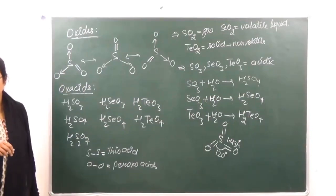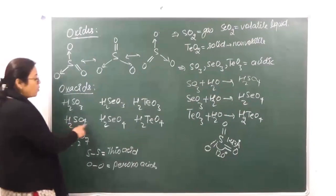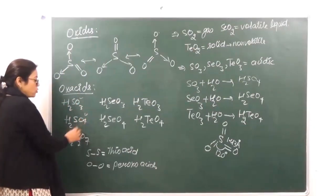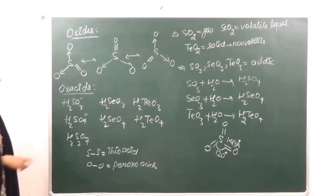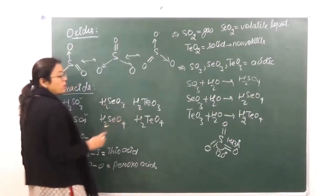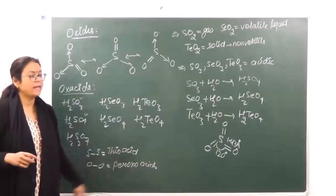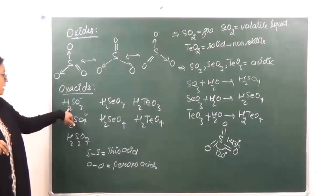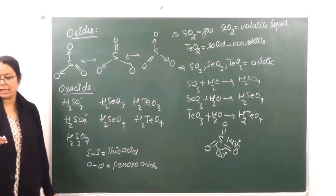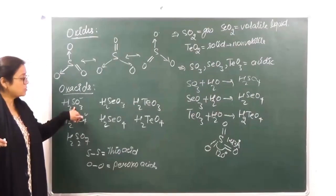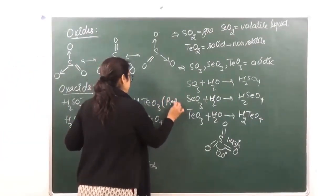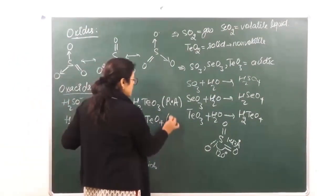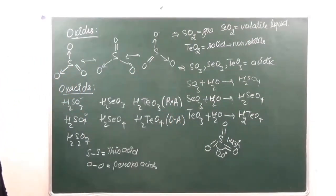In oxa acids of Group 16, the acidic character keeps on decreasing down the group. Looking at oxidation number — as with H2SO3 and H2SO4, if the oxidation number is increasing, the acidic strength increases; if the oxidation number is the same, the acidic character decreases down the group. H2SO4 is the strongest acid and H2TeO4 is the weakest. Also, the oxo acids in lower oxidation states are reducing agents, and those in higher oxidation states are oxidizing agents.